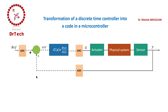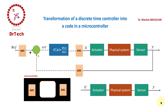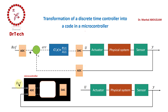Now suppose you have a microcontroller containing ADC and DAC converters, plus a section where you can write code programmable in C, C++, or any other programming language. You want to use this microcontroller to make a closed loop for a system with input U and output Y. You can inject the reference signal and signal Y into the microcontroller, where the ADC converts these analog signals into digital values usable by your code.